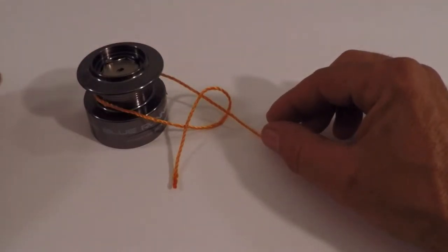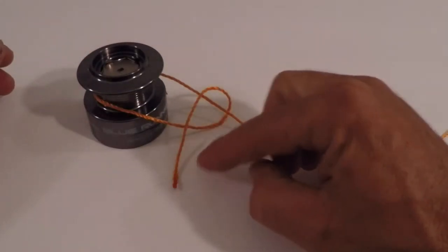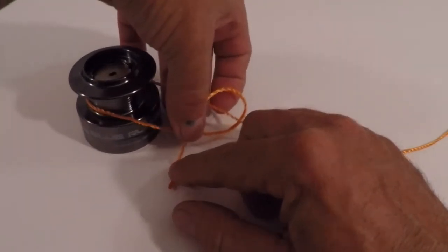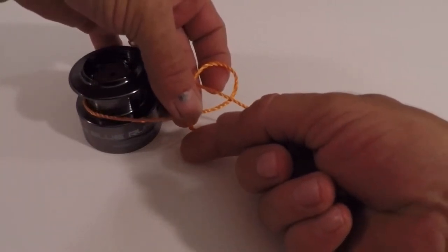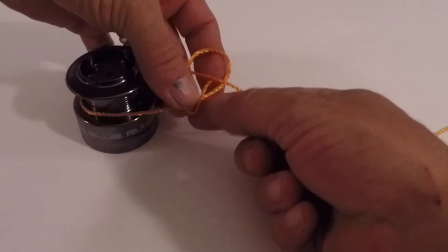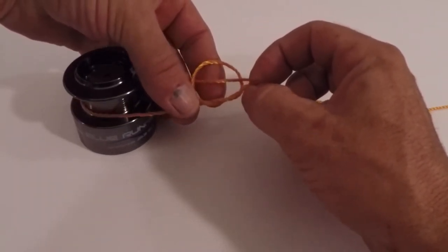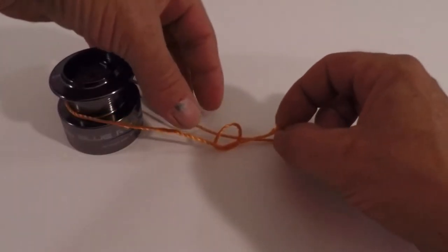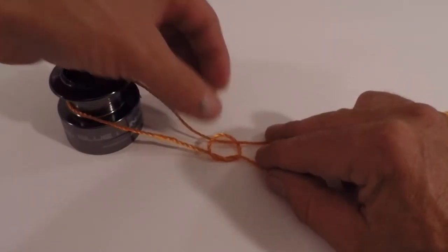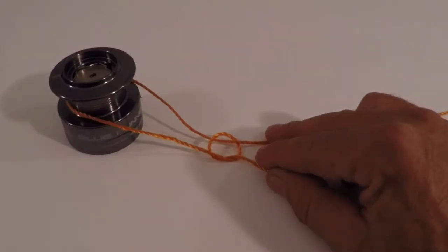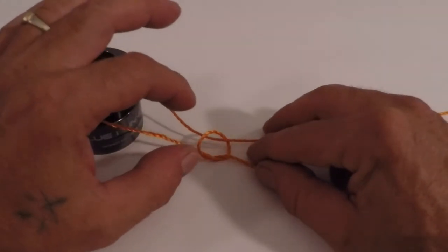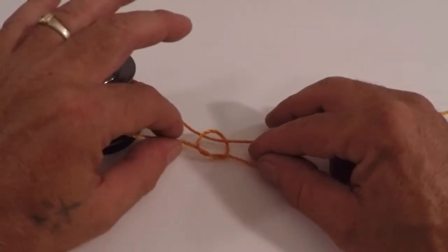Then you're gonna come back over like this. See how you went over both of them? You're gonna go over both of them there, and then you're gonna come back up through, bring it back under, and then back up through that one and pull your tag. As you can see that's what you'll end up with. Now you pull that.